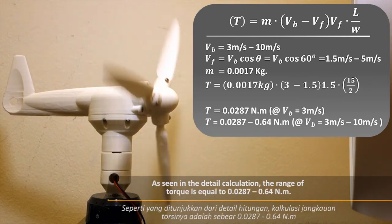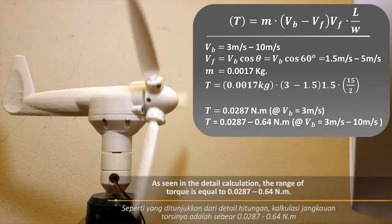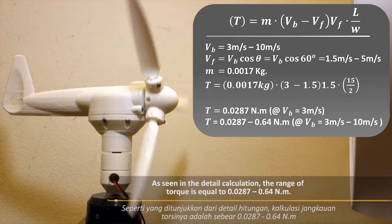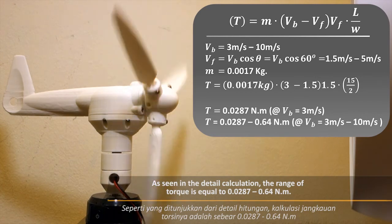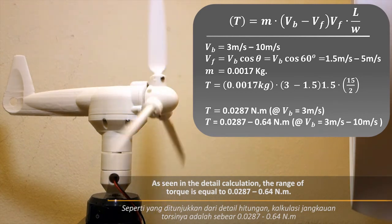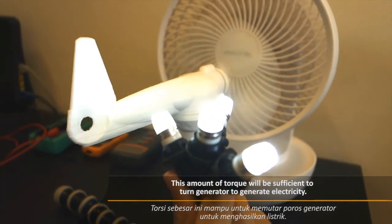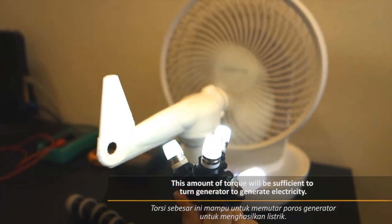As seen in the detailed calculations, the range of torque is equal to 0.0287 to 0.64 Nm. This amount of torque will be sufficient to turn the generator to generate electricity.